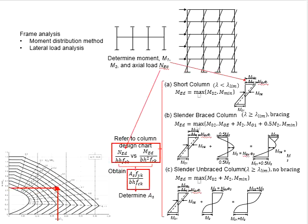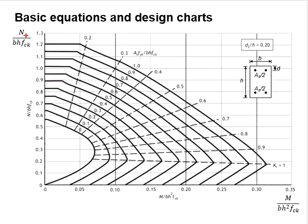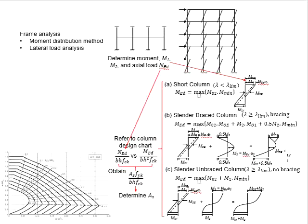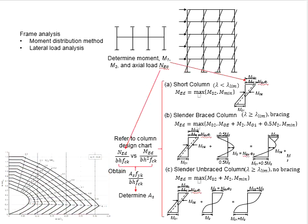Determine the value As·fyk / (b·h·fck) from the chart. With the known values of fyk, b, h, and fck, you will be able to determine the amount of reinforcement bar required in the column. The application of the design chart has also been described in previous videos. You may refer to those videos for further information. To design a column, you need to refer to the design chart, as this is the simplest calculation step available.